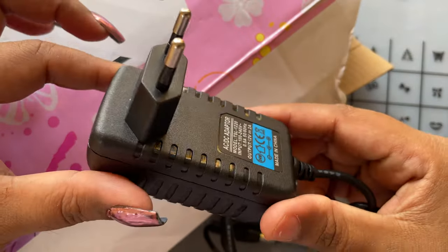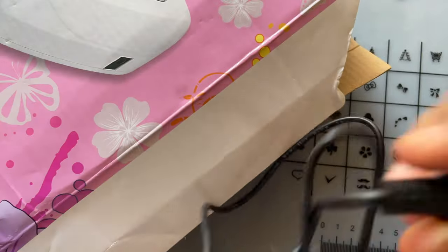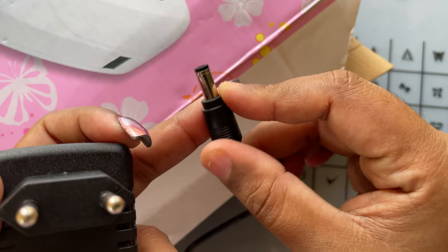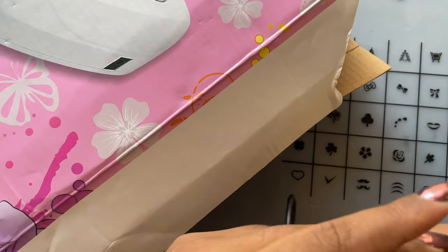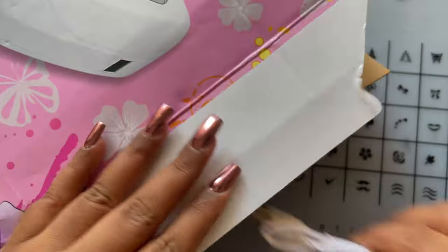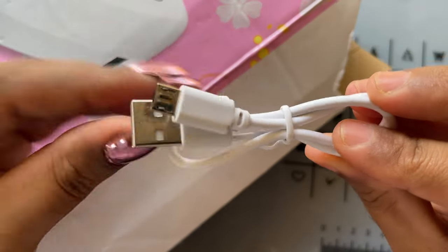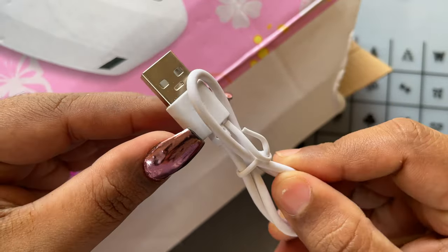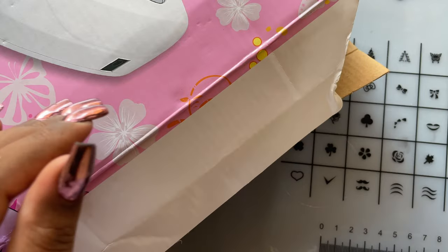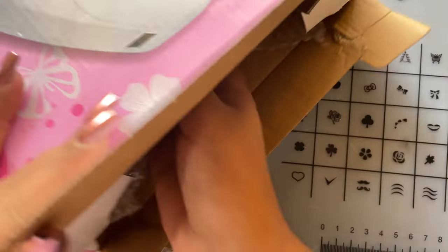And then there is this jack. This will go into the dust collector and then you can start and use it. And there was also this USB cable. I don't know why this was included because there is no option to connect this one, but anyways it came in. So I think instead of the user manual they put that USB cable inside.